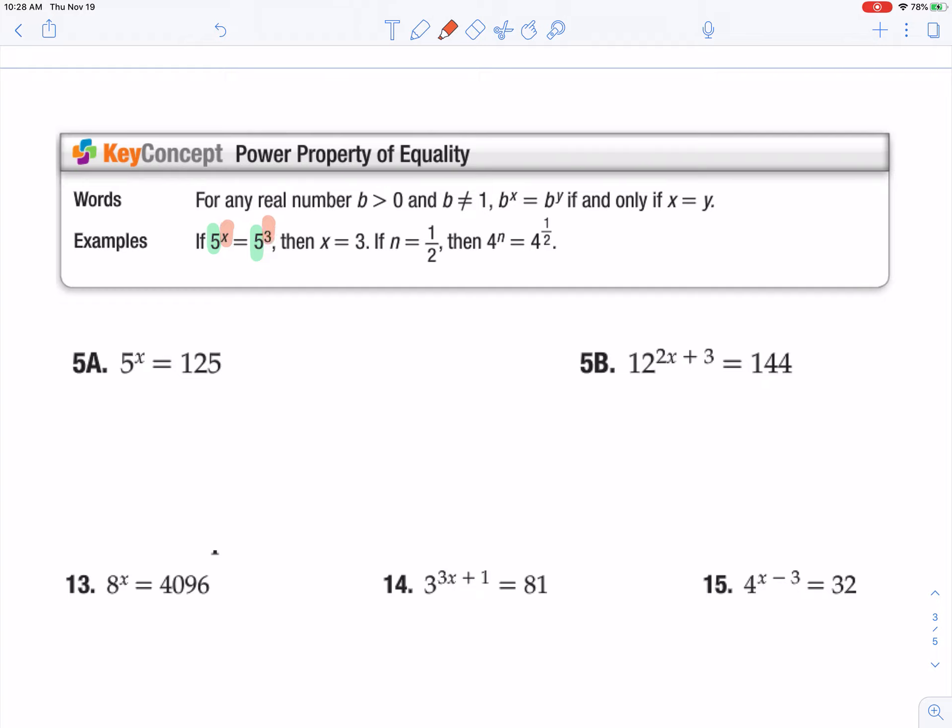Okay, 5 to the 3rd is 125. The only way to get to that spot is if x equaled 3 over here. So it's almost like you can say your bases cancel out. They don't really actually cancel per se, but you can use that thinking mentality to get to where we need to go here.